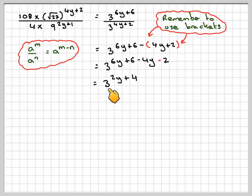So we've now got that down to a single base. This is what we call base. And so we can now compare that with 3 to the p. We can see that p has to be equal to 2y plus 4.